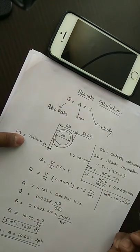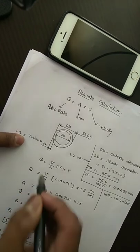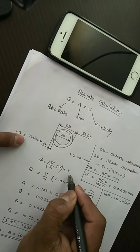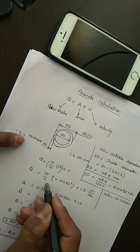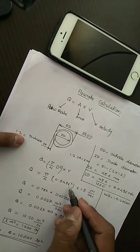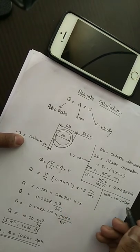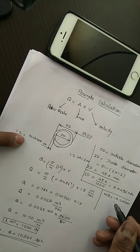Q = Area × Velocity. Q = (π/4) × D² × V. We calculated D already. For milk, we generally take the velocity as a reference of 1.5 meters per second.